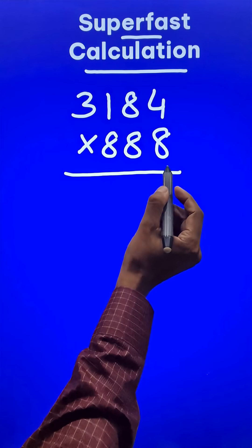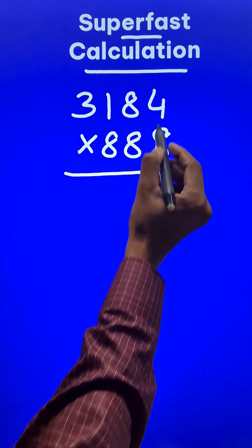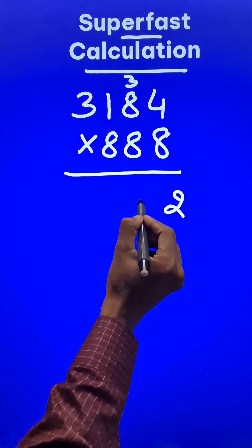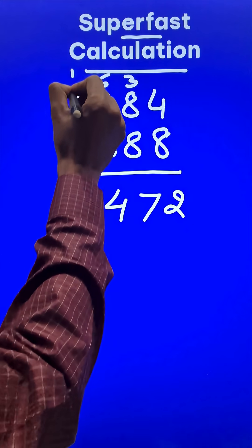Now instead of multiplying this number by 888, let's multiply it by 8. So 8 times 4 is 32, so 2 and a 3 carry. Now 8 times 8 is 64 plus 3 is 67, so 7 and a 6 carry. 8 times 1 is 8 plus 6 is 14, 4 and a 1 carry.